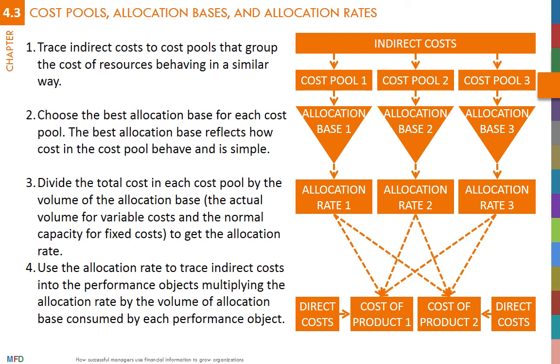It is important to remember that if indirect costs are fixed, then the volume used to estimate the allocation rates has to be normal capacity, so that the cost system does not lead to a death spiral.